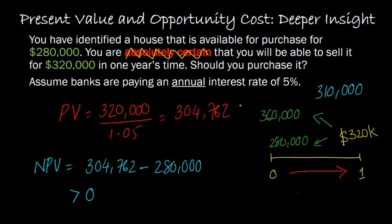Would it be 304,762? If you think about it logically, the answer is no. You'd argue that you'd want to spend something less. Why? Because 304,762 was what you were willing to spend when this $320,000 was riskless. But now if there is some risk involved — if there could be a downturn in the real estate market — you could potentially lose your investment or not make any return. Would you be willing to spend the same amount? The answer is no, you'd be willing to spend something less. Because there's risk involved — and this is the key.